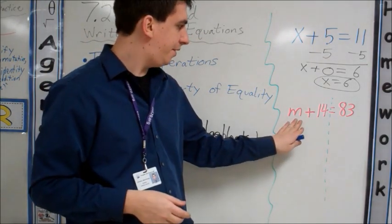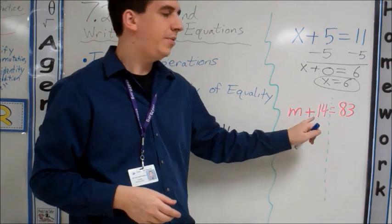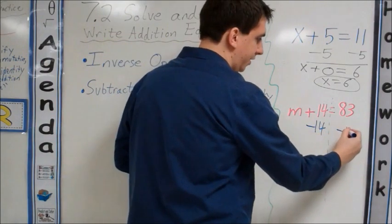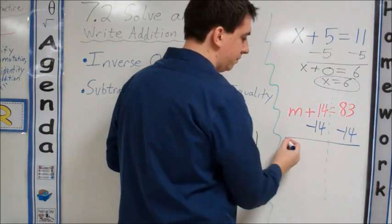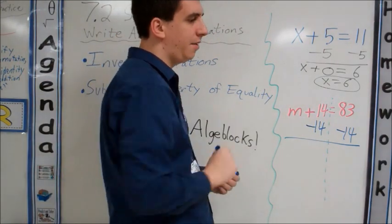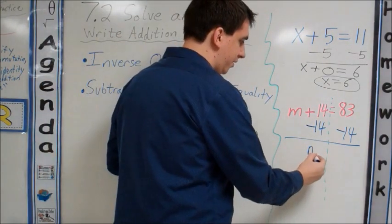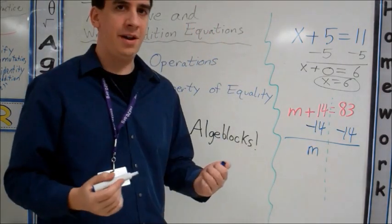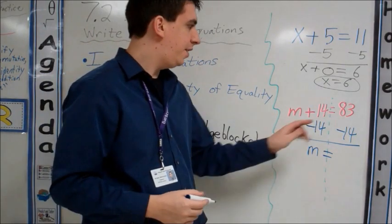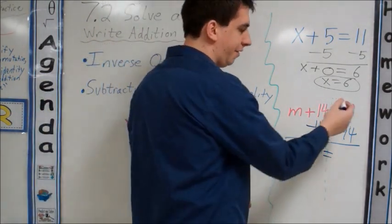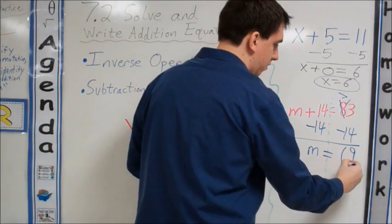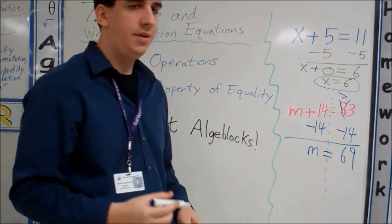Our variable here is also on the left. M plus 14. I'm thinking what's the inverse of plus 14? And that's minus 14. So we're going to subtract 14 from both sides. 14 minus 14 is 0. We can look back at the problem we did before, too. Or we can just say, well, that's 0, so I'll just write M. M equals 83 minus 14. If you have to borrow or carry, you can do that all right here. Everything is set up vertically for you.